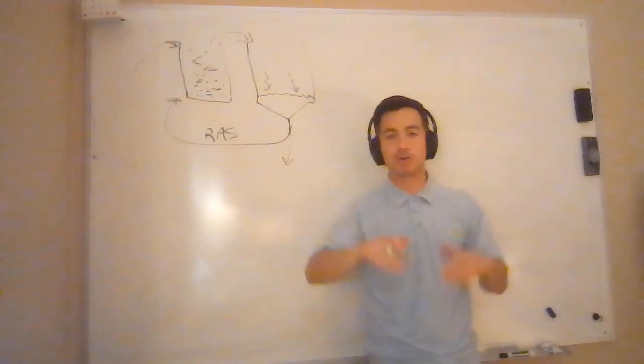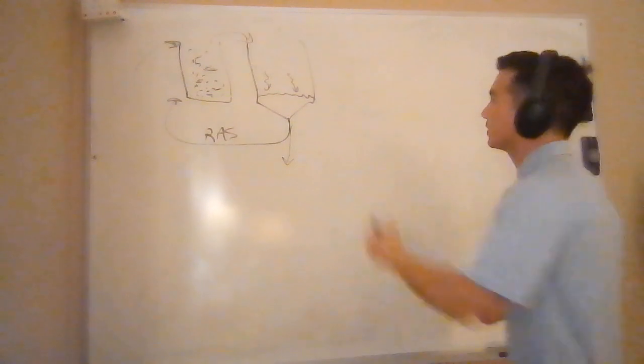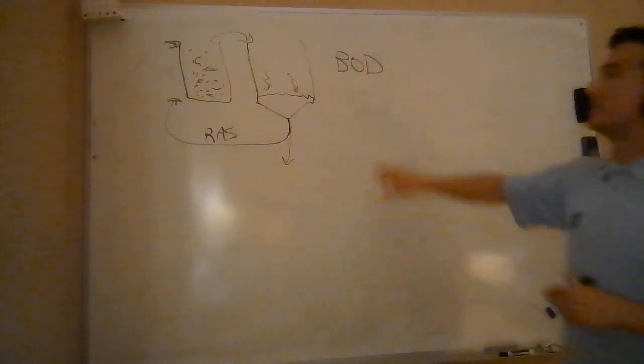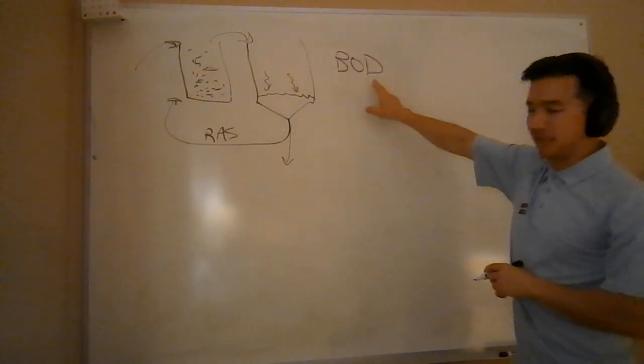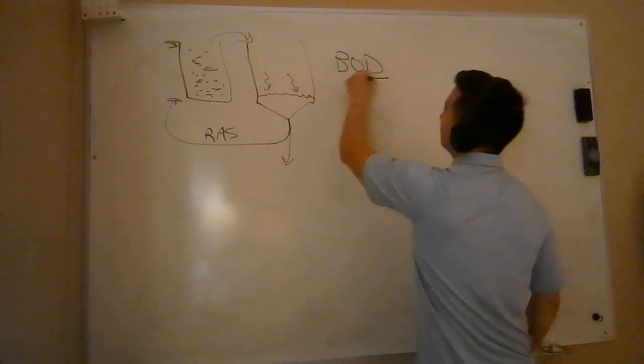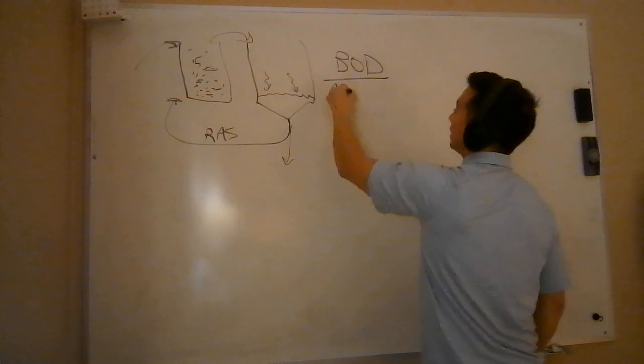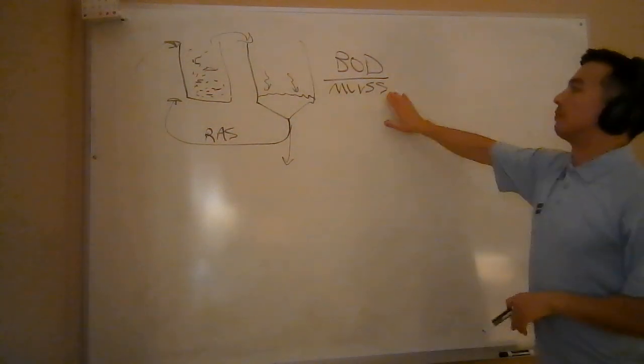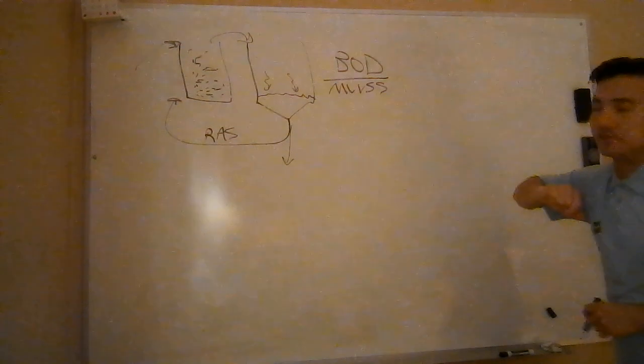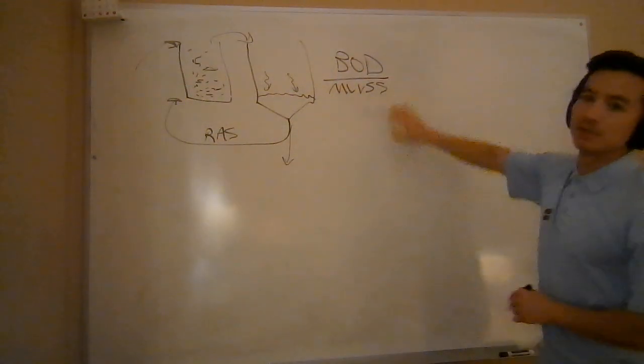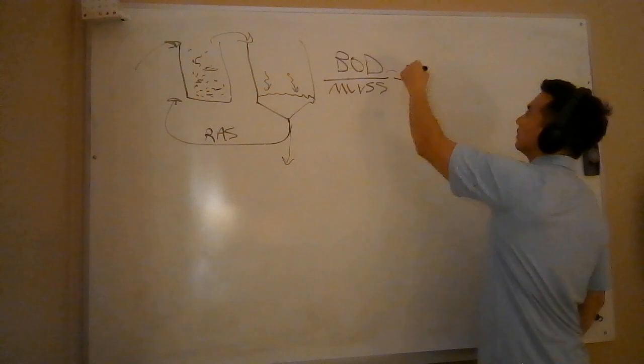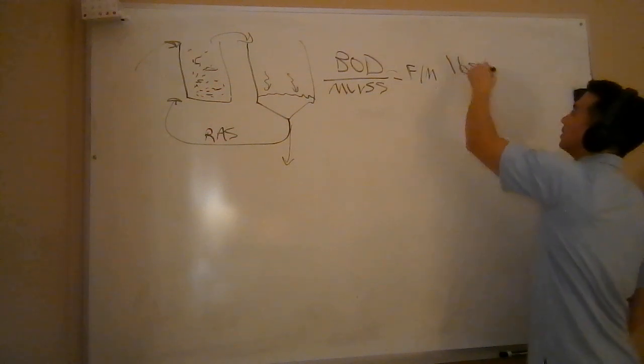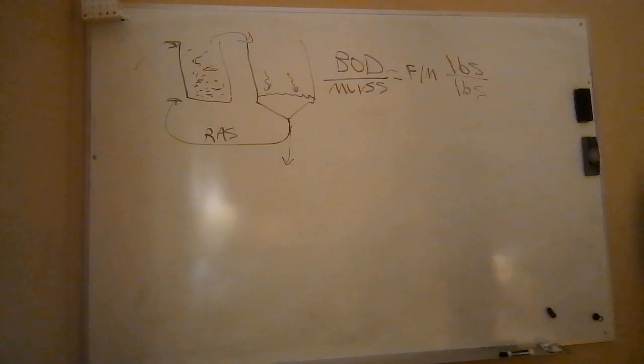We need to balance the amount of food and the amount of microorganisms available. How do we calculate this? Remember when we talk about food, we are referring to the BOD. Remember what does BOD stand for? Biological oxygen demand. We are referring to BOD as our food quote unquote. We are going to be comparing that to our MLVSS, our mixed liquor volatile suspended solids, which represents our microorganisms that are available to consume the food. And so this ratio of food to microorganisms is actually how we calculate our FM ratio, our food to microorganism ratio.